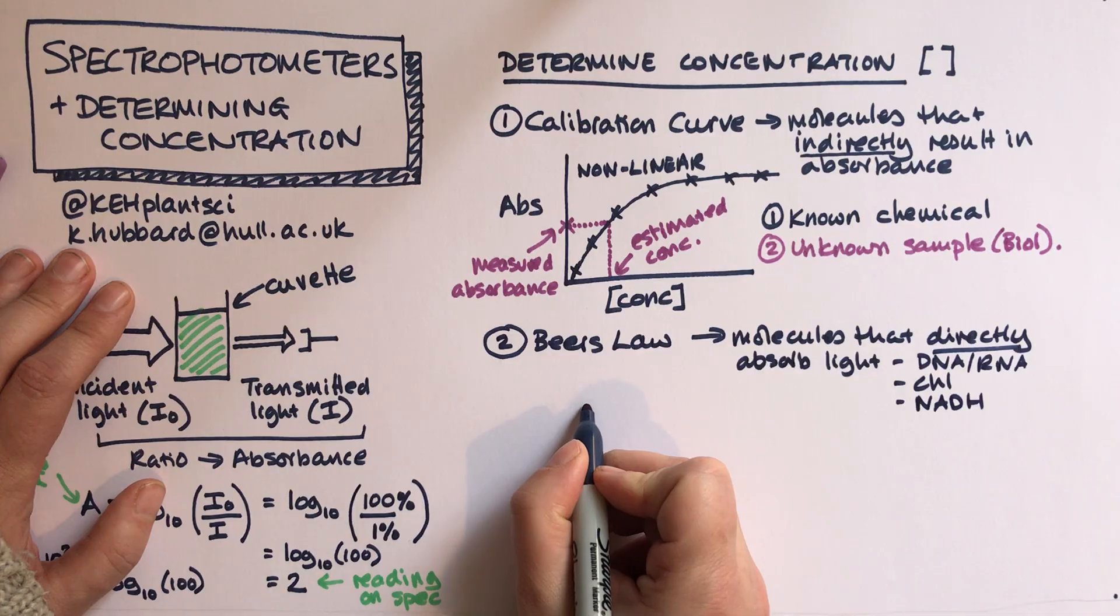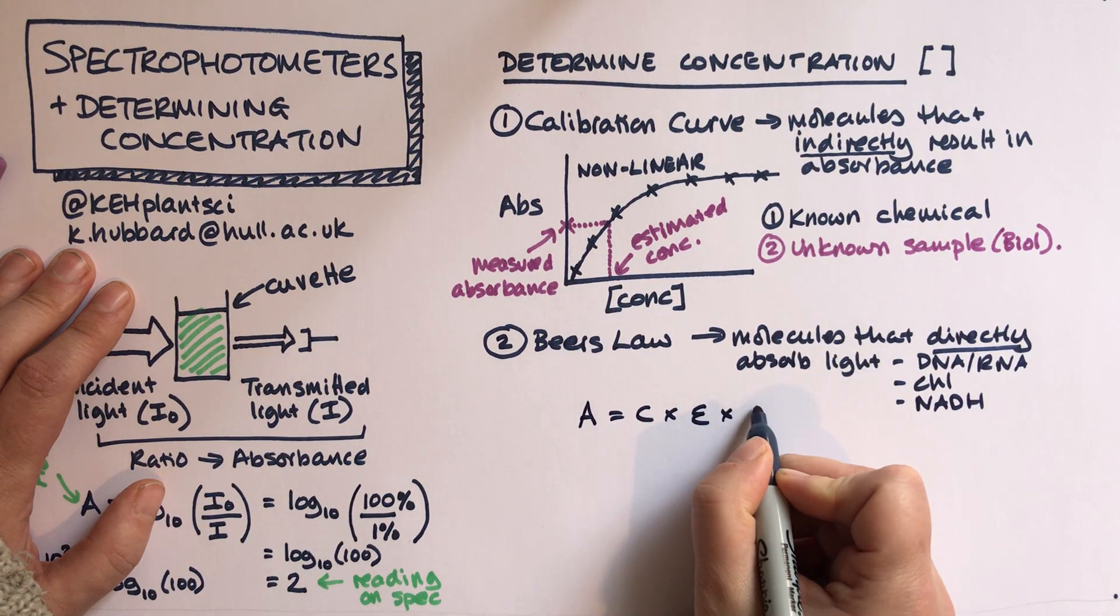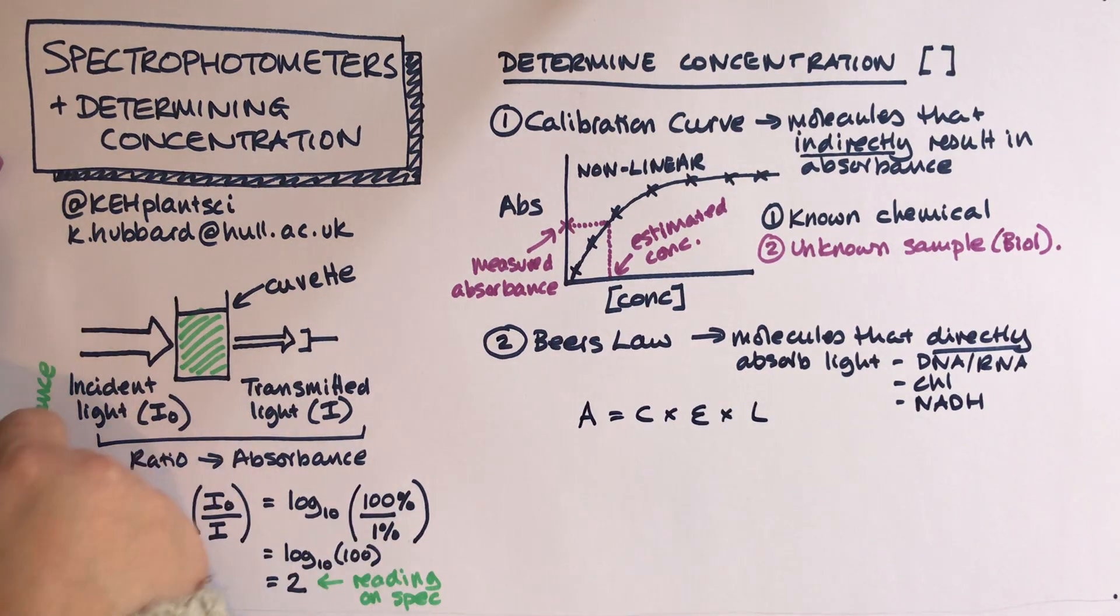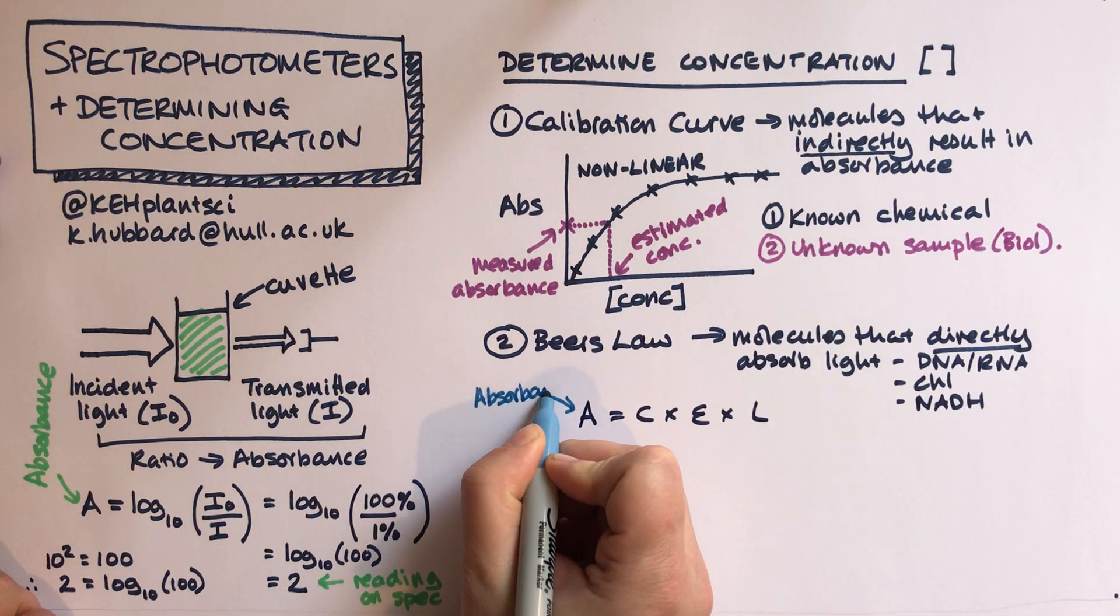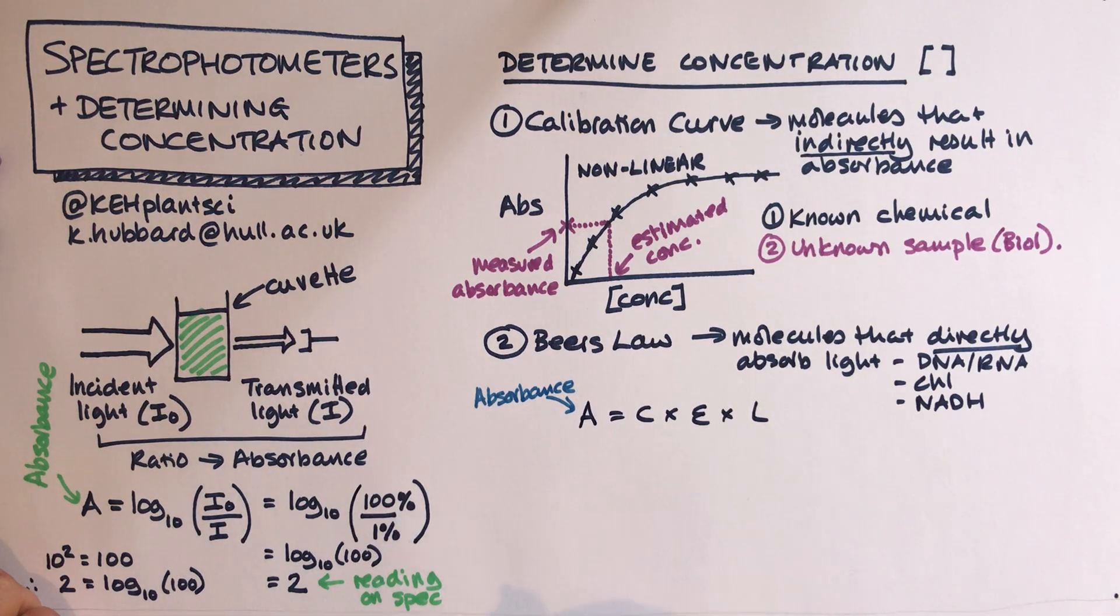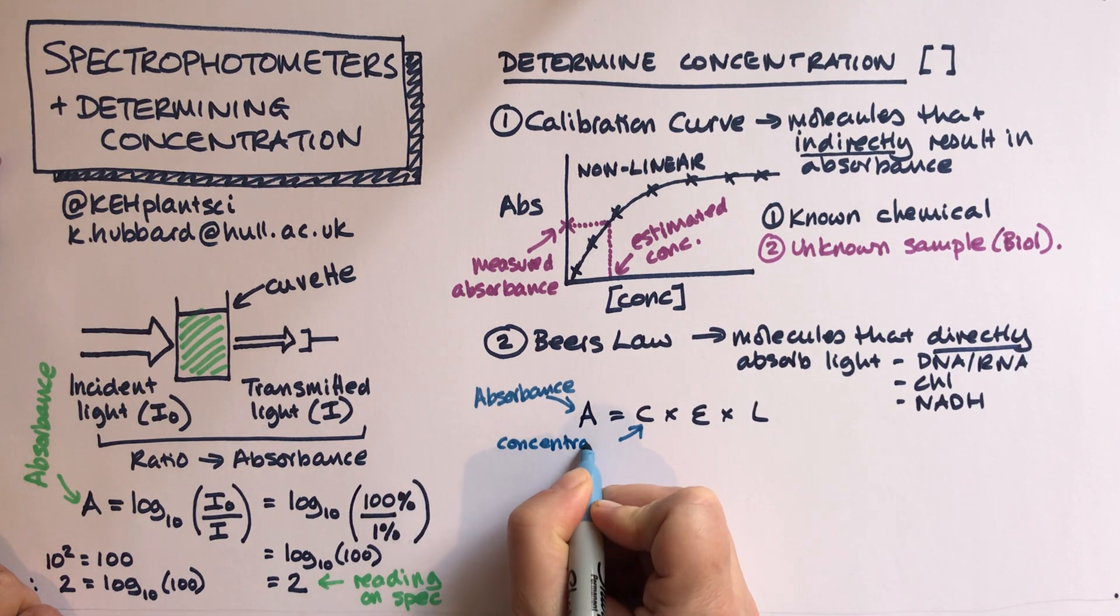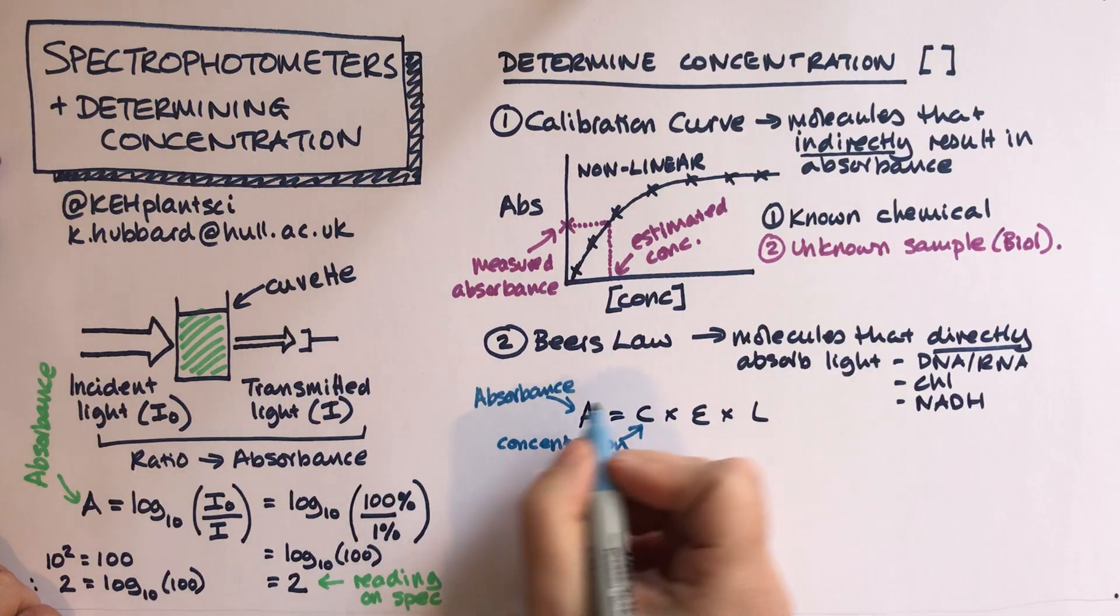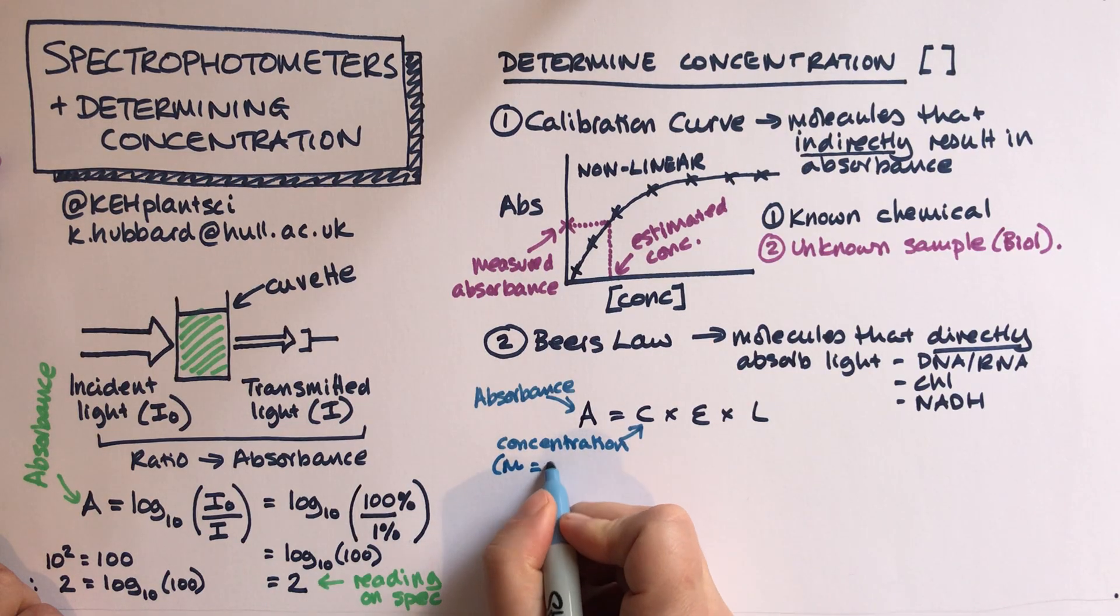Beer's law states that A equals C times epsilon times L. So that's the equation. What are all these bits in the equation? Well, A is absorbance at a particular wavelength, C is the concentration.